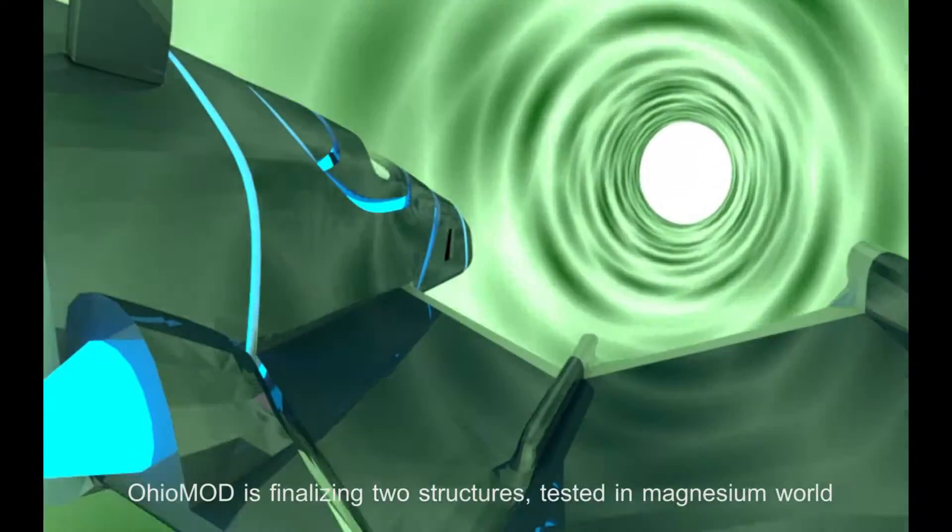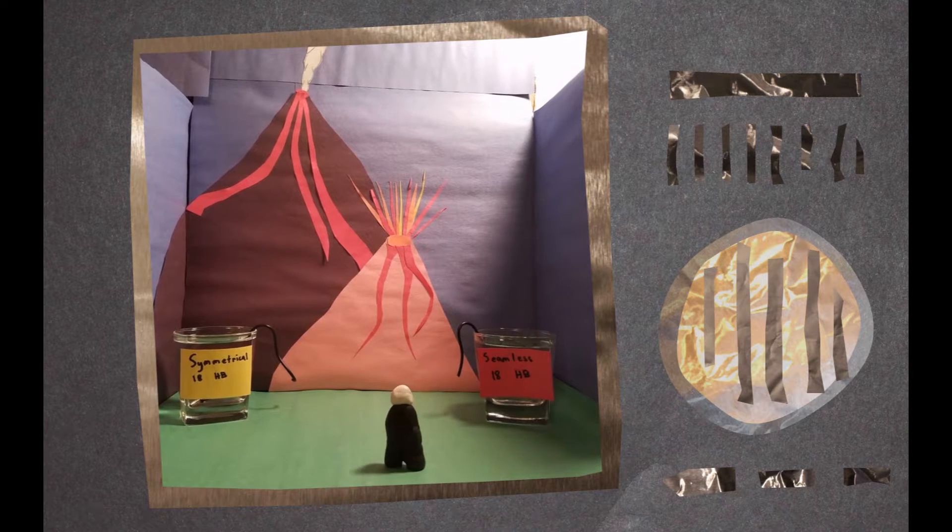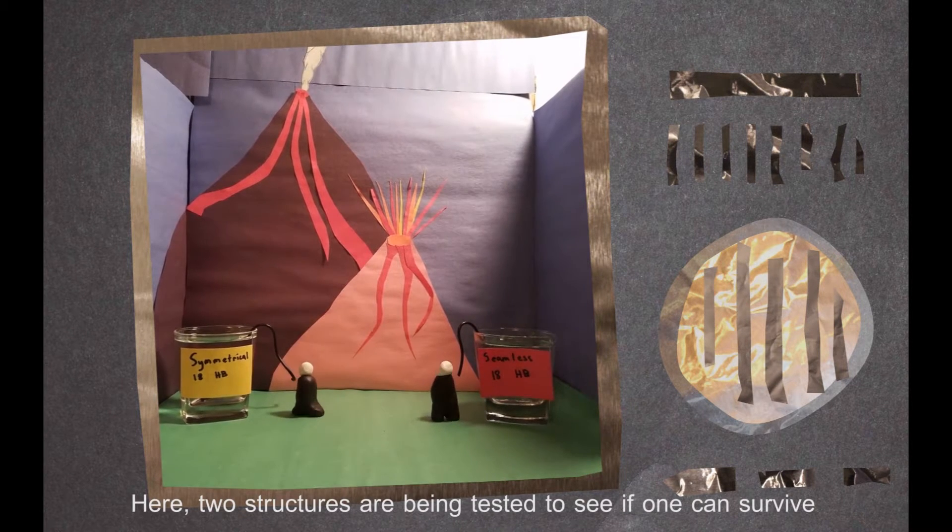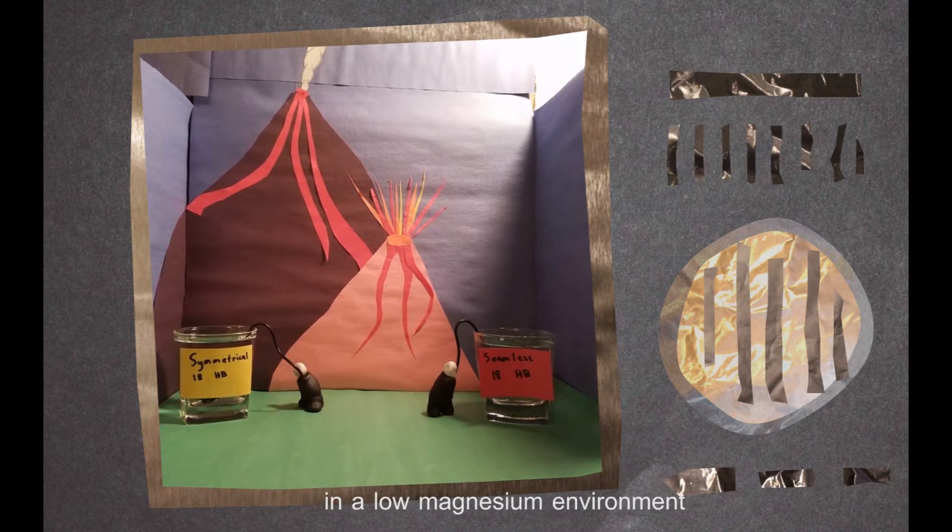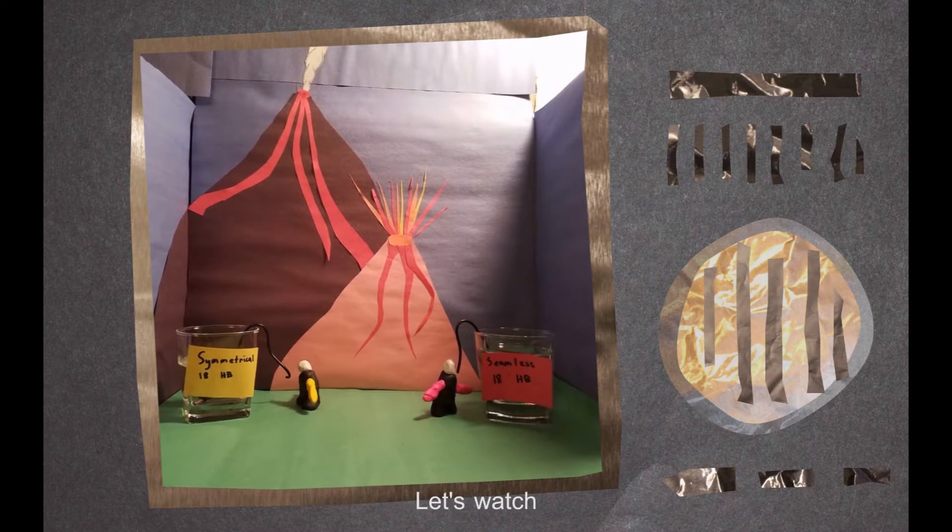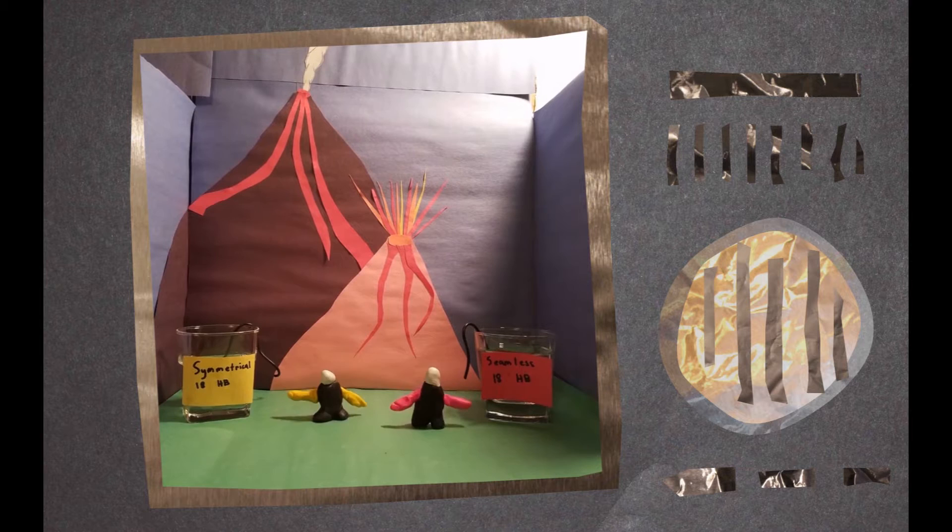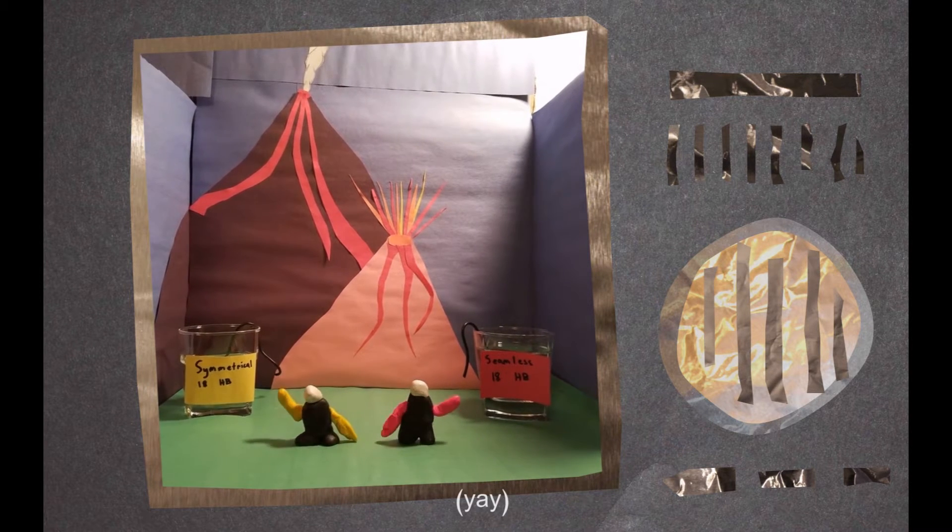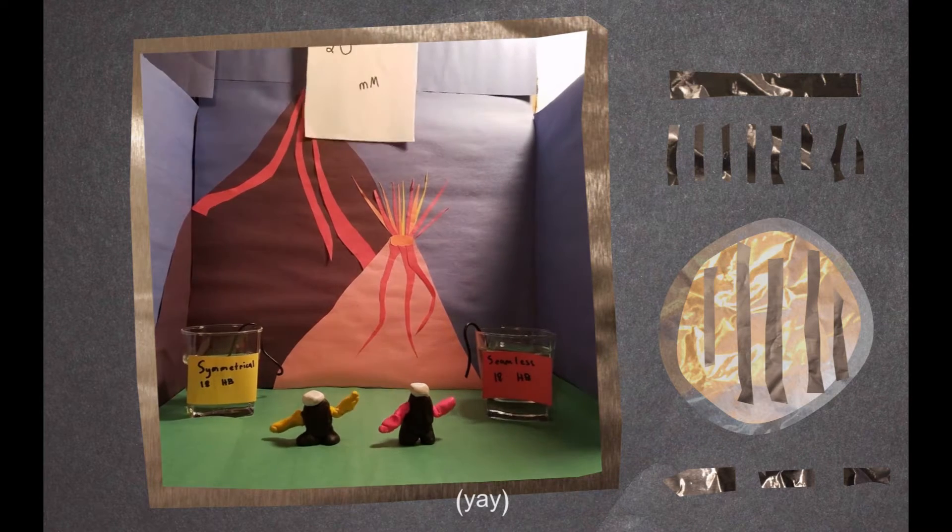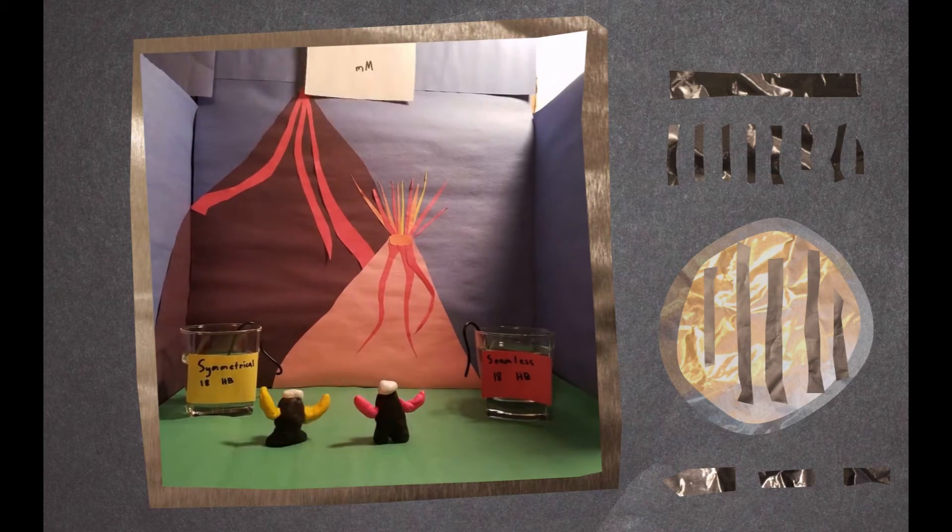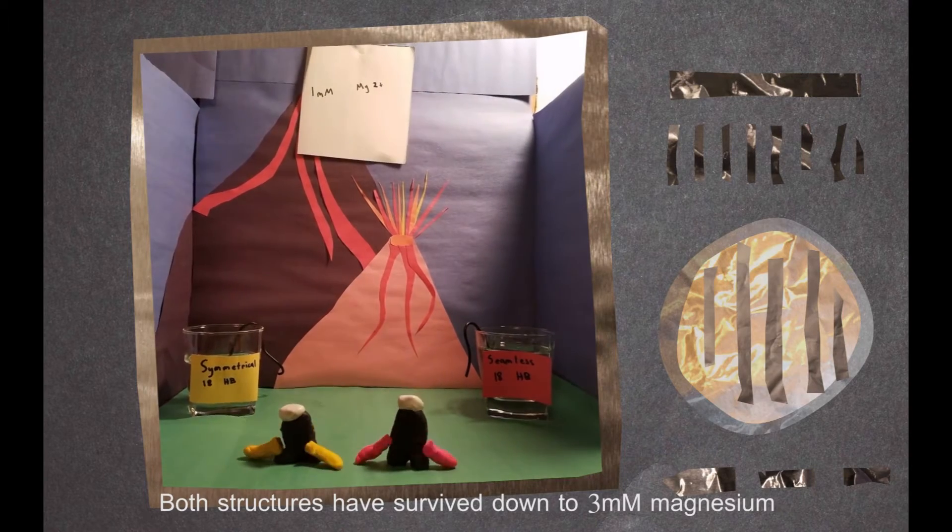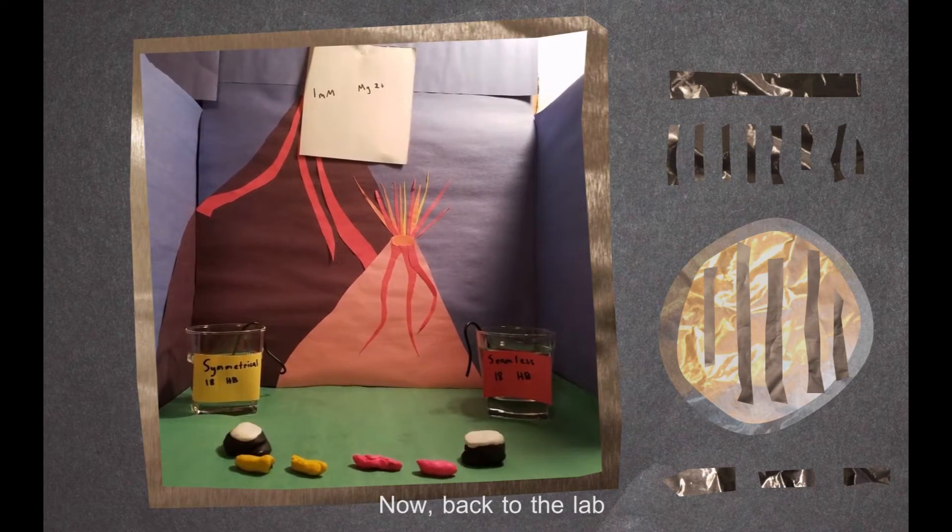OhioMod is finalizing two structures tested in Magnesium World. Here, two structures are being tested to see if one can survive in a low magnesium environment. Let's watch. Both structures have survived down to 3 millimolar magnesium. Now, back to the lab.